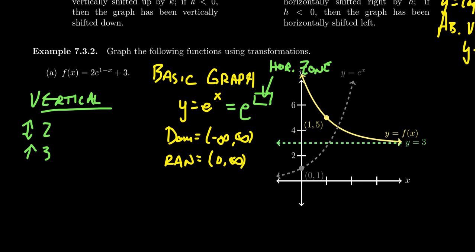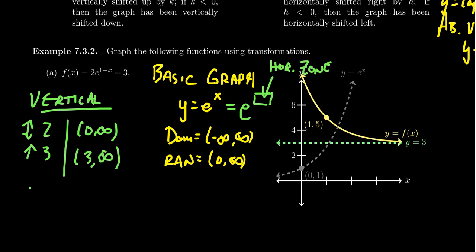The 1 minus x inside the exponent will affect the domain but not the range. For the range, we only worry about the vertical transformations, going in the right order: reflect, then stretch, then move. There was no reflection. Vertical stretching means multiplying all y-coordinates by 2 — 0 times 2 is still 0, infinity times 2 is still infinity — so stretching doesn't change the range; it's still 0 to infinity. Then a vertical shift adds 3 to each y-coordinate: 0 plus 3 equals 3, infinity plus 3 is still infinity. So the range of f is 3 to infinity.